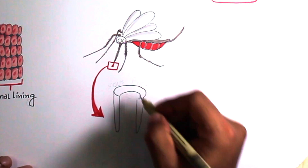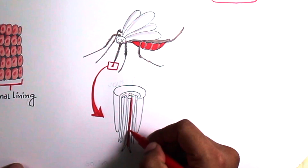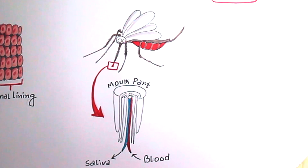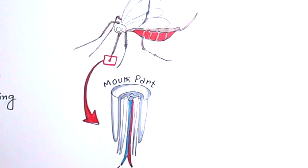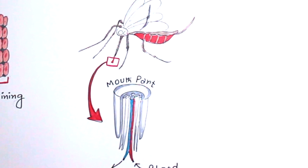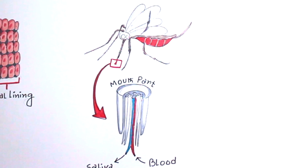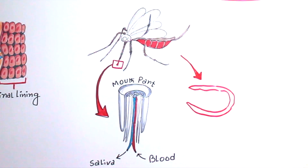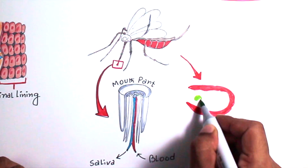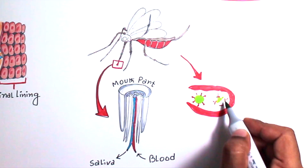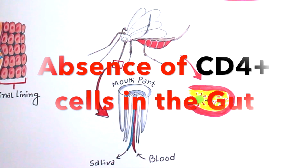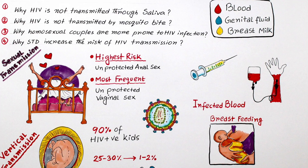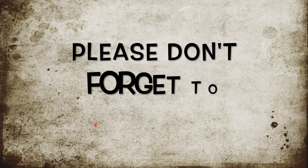Finally, HIV is not transmitted by mosquito bite. The mosquito's mouthpart is composed of six parts: four are used to pierce the skin, and the other two are tubes — one sends saliva into the host and the other draws blood up into the mosquito. Only saliva is injected into humans, so HIV-positive blood the mosquito previously ingested is never transmitted. Additionally, HIV cannot replicate within the mosquito gut due to the absence of CD4-positive cells, so HIV particles are digested and completely destroyed.